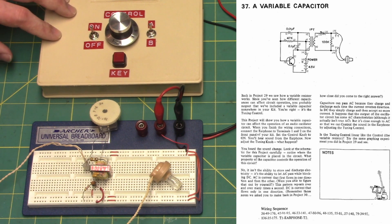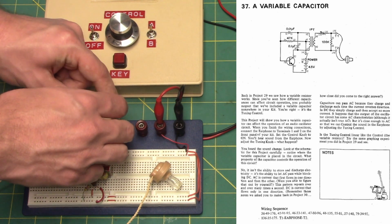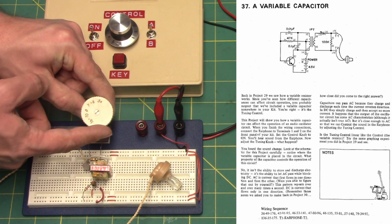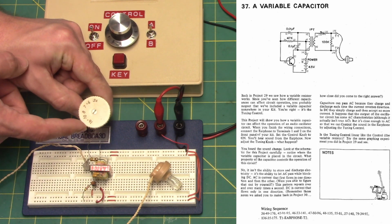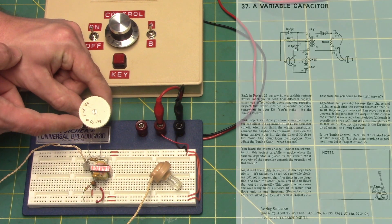Is the tuning control linear like the control, the variable resistor? Try the same graphing experiment you did in Project 29 and see.